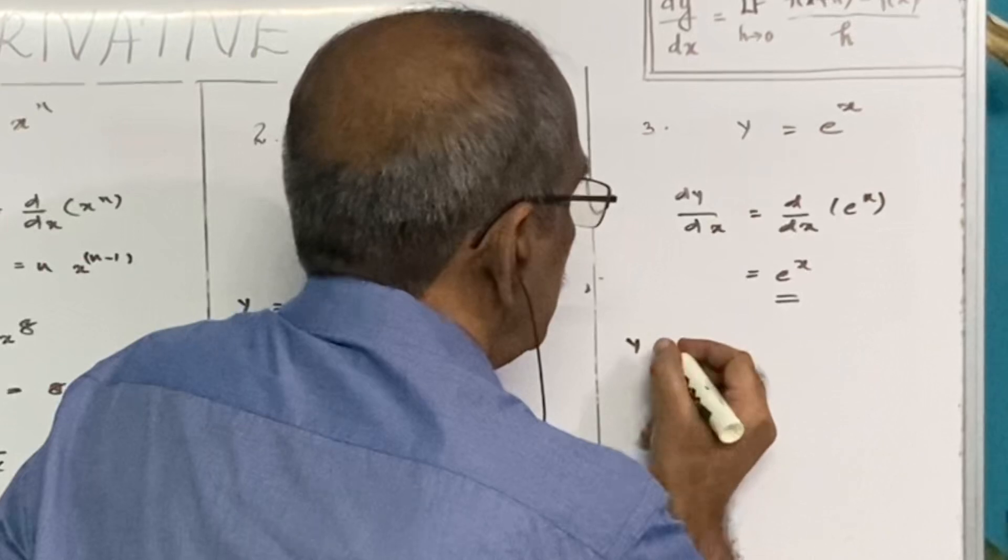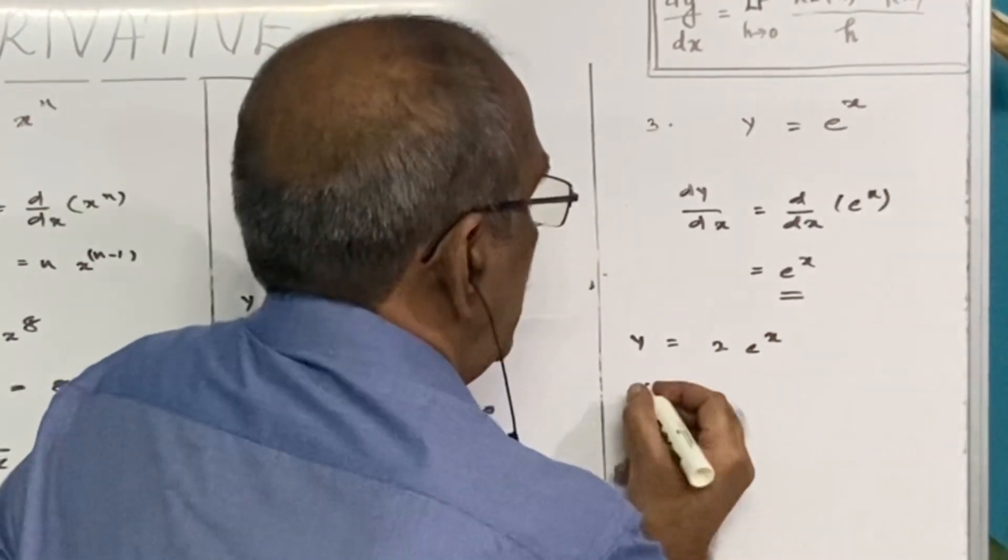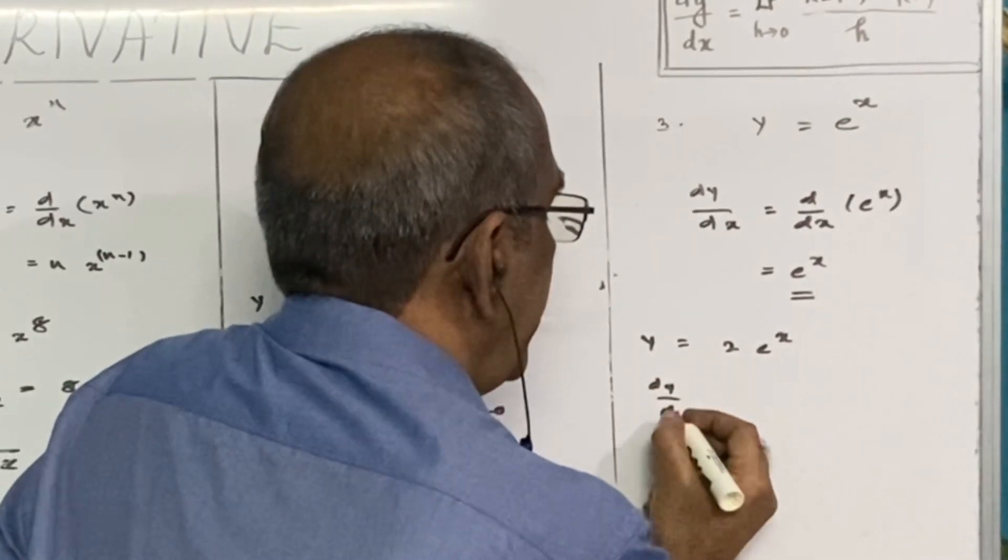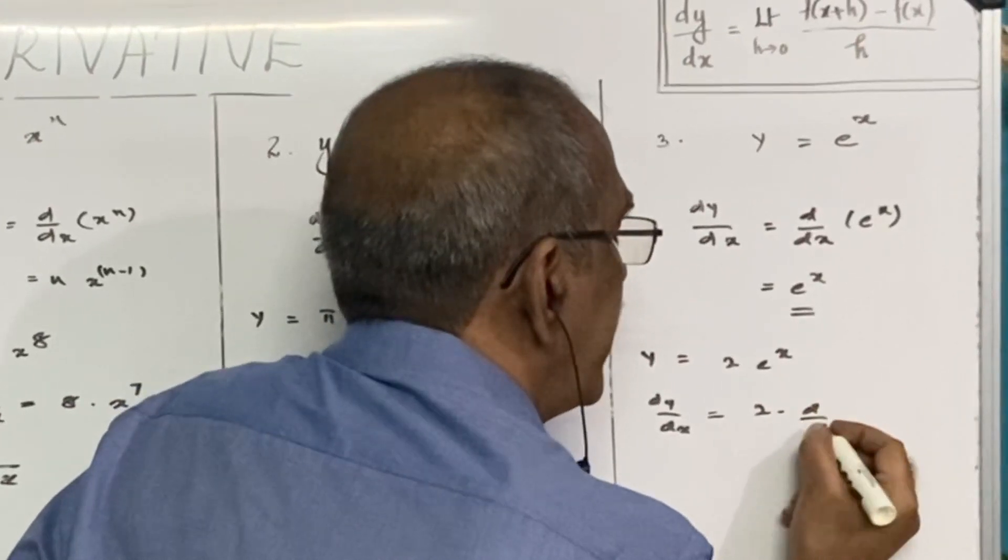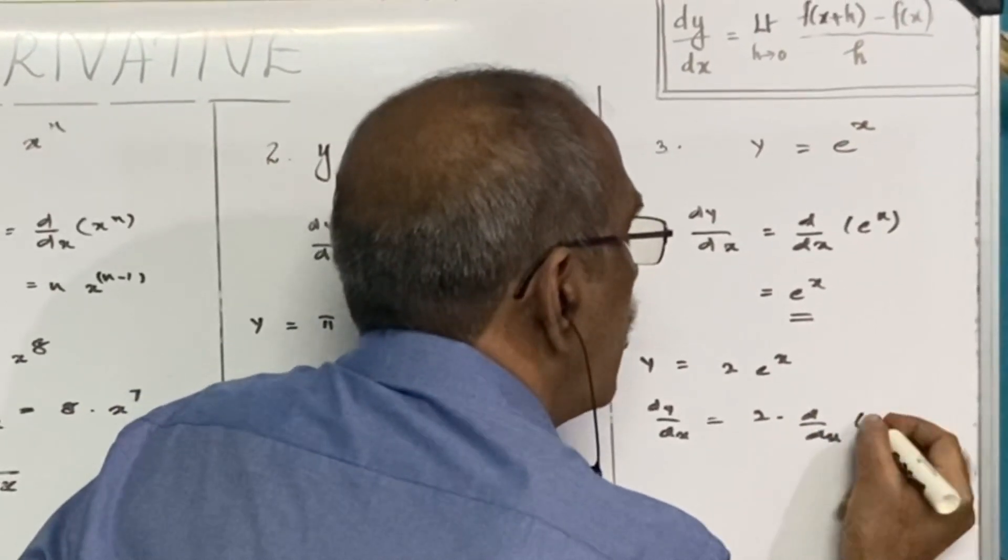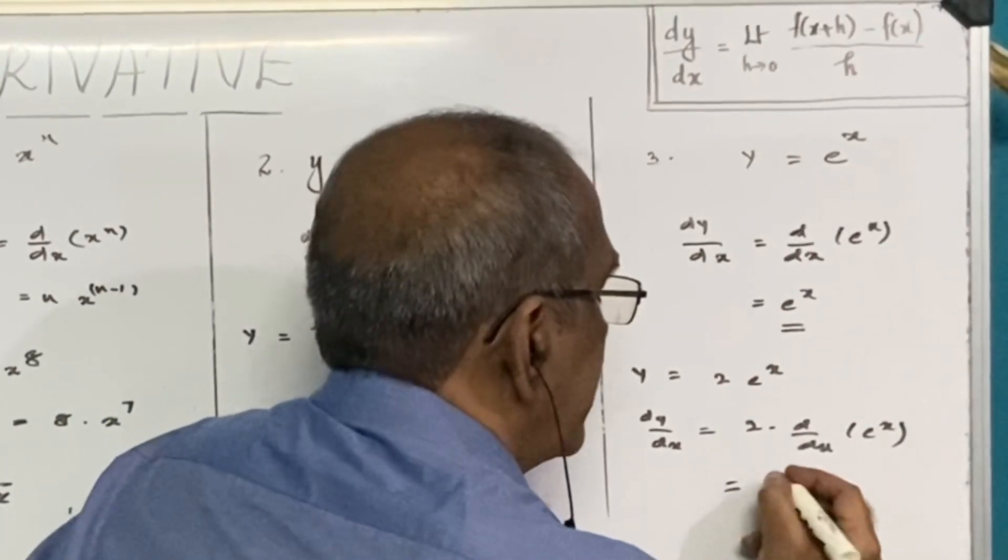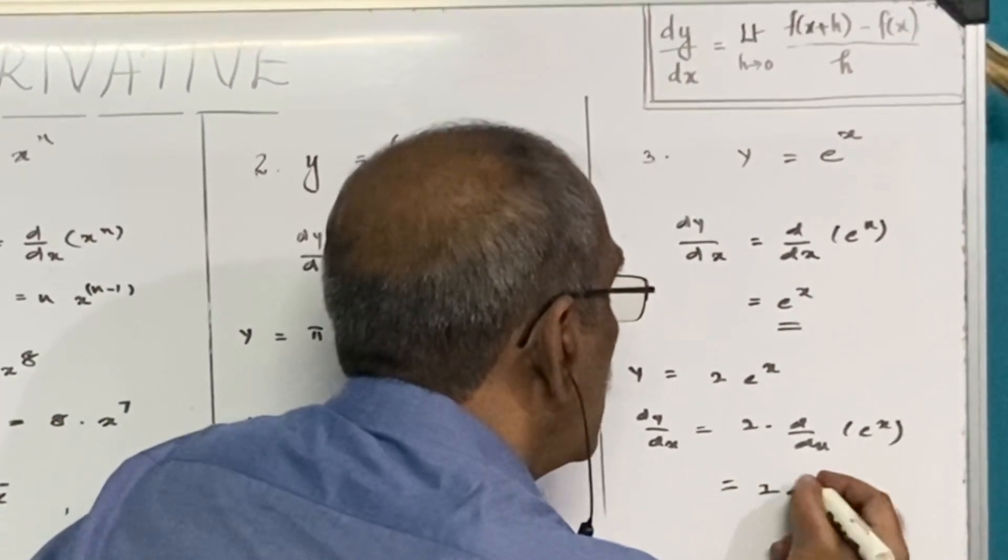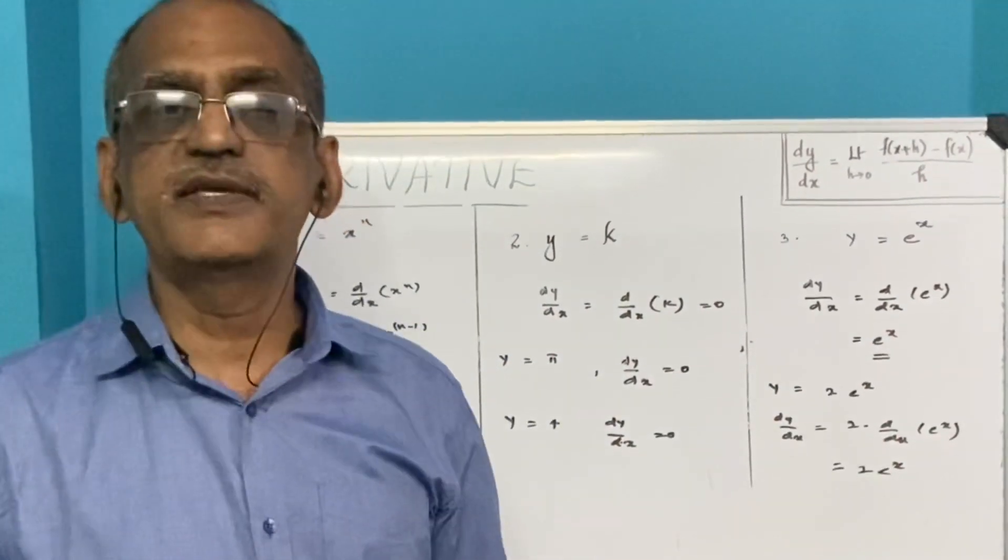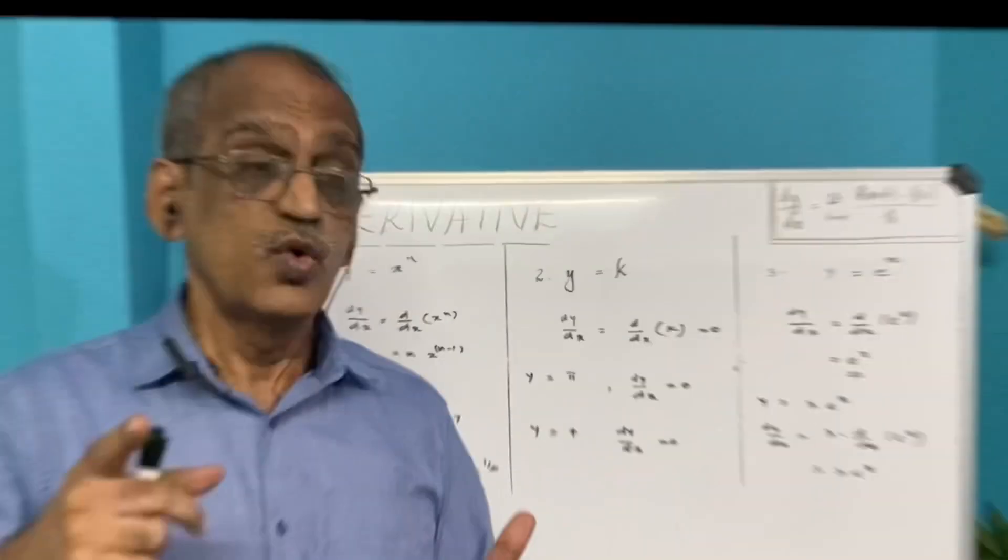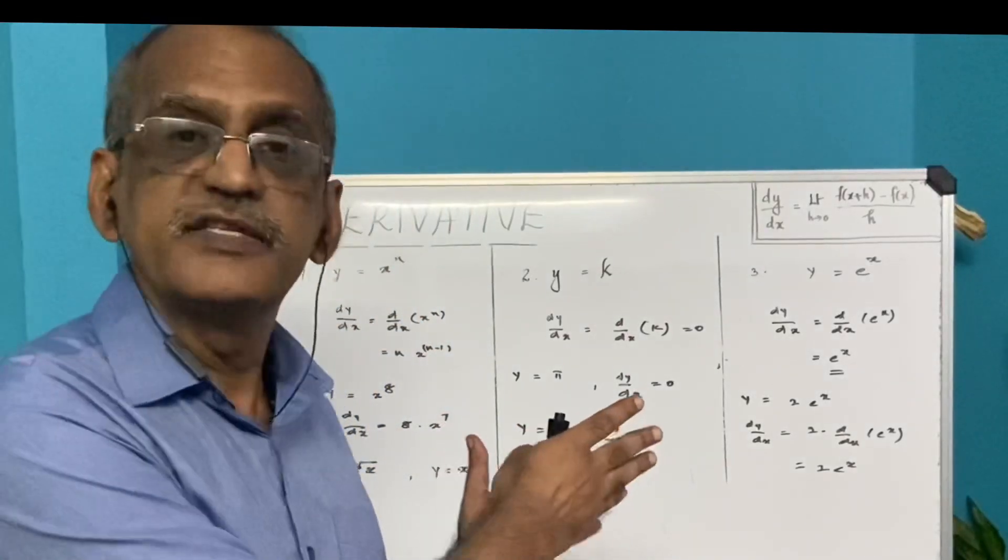If y equals 2e raised to x, then dy/dx will be equal to 2 times d/dx of e raised to x, which is 2e raised to x. So whatever the functions are, you can easily state its derivative.